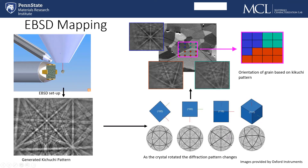Each Kikuchi pattern has some directionality associated with it. So in the 100 direction you can see a particular Kikuchi pattern, and if we turn it 45 degrees, all we're doing is rotating the Kikuchi pattern 45 degrees. Essentially that's what we're doing when we're mapping — going step by step across the microstructure at some known step size, determining the directionality of that Kikuchi pattern, and assigning it a specific color based on a color key.